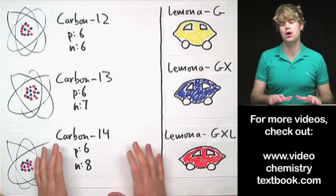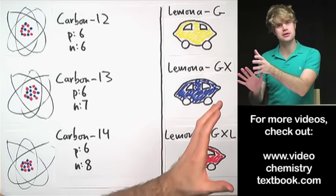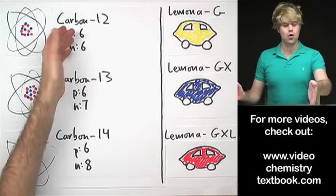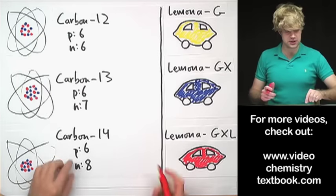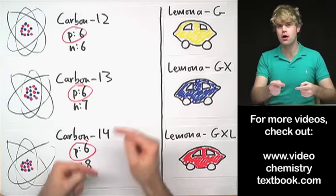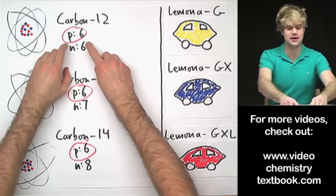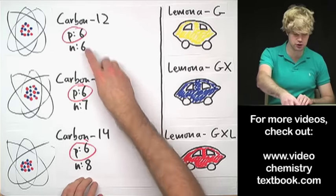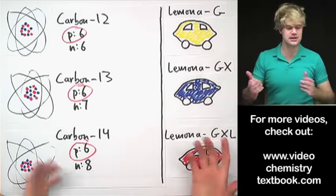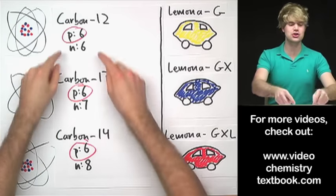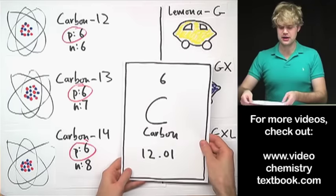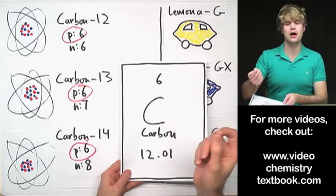So what do we have in common here? All the different models of the Lamona, even though there are things that they differed about, all have the same distinctive lemon-like shape. So for carbon, what they all have in common is they have six protons. Six protons in the nucleus and that's what makes a carbon atom a carbon atom. So it turns out that it doesn't matter how many neutrons it has. Six neutrons, seven neutrons, eight neutrons, no big deal. It's just like painting the Lamona different colors or adding a radio or a CD player. The neutrons, it doesn't matter. It doesn't change the fact that each one of these are a carbon atom.